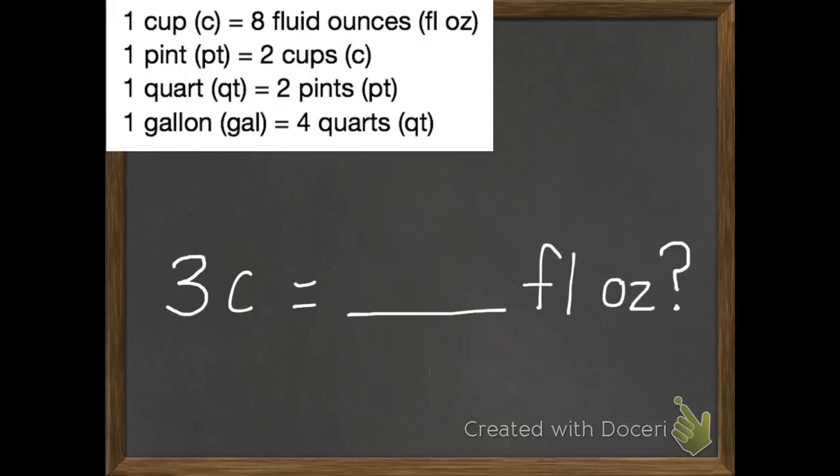Our first problem wants to know if we have three cups, how many fluid ounces will that be? So the basic fact we're going to use is this first one that has cups and fluid ounces. We know that each cup takes eight, and we have three. So we're just going to multiply eight times three, which is 24. So three cups equals 24 fluid ounces.